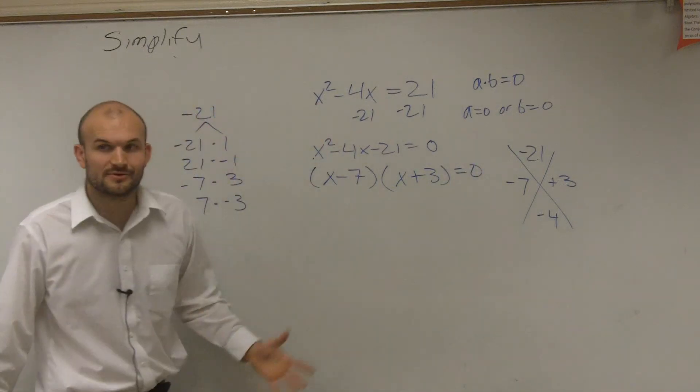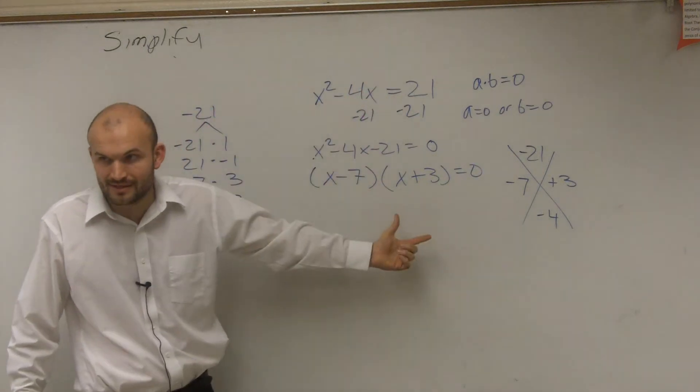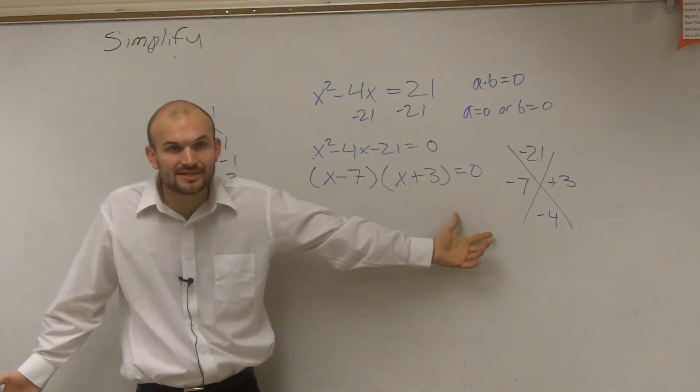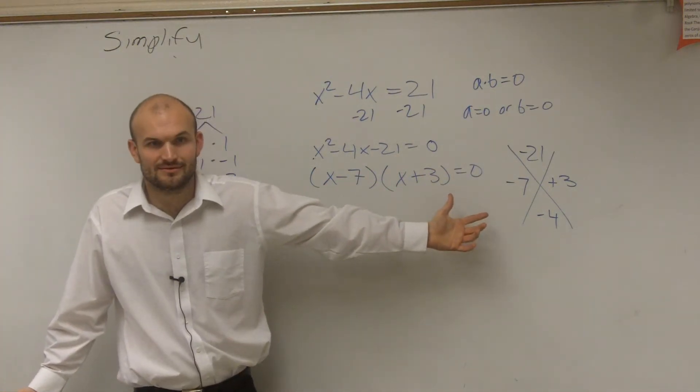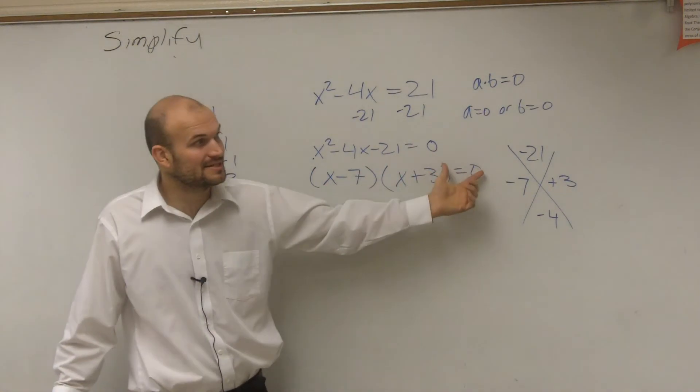Now, so remember, factoring creates a product. So now we have a product equal to 0. Isn't that cool, Austin? We have a product equal to 0.